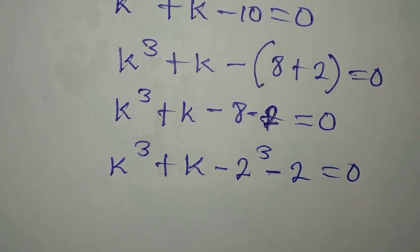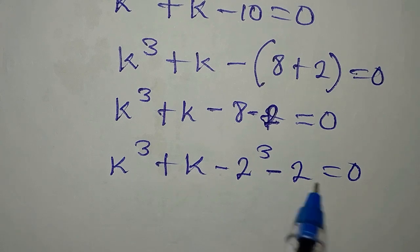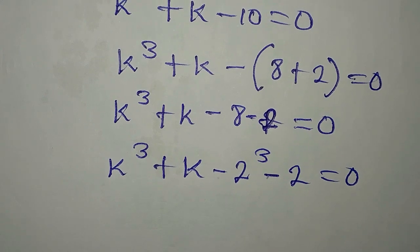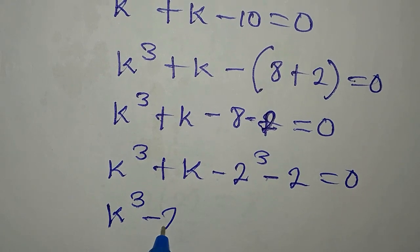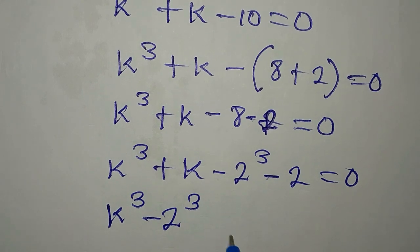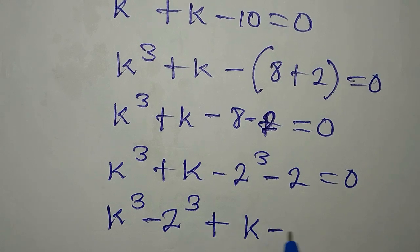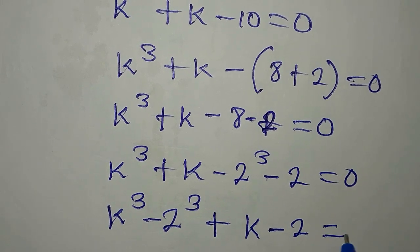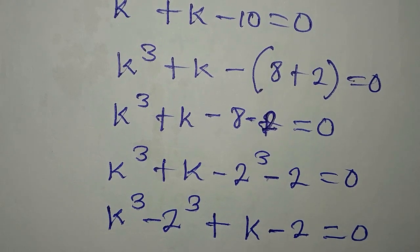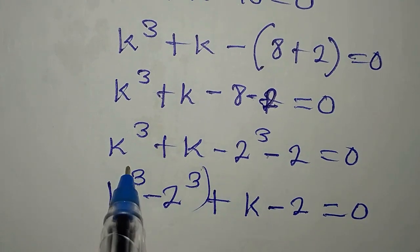The next step is to regroup so that we can work with the cubic terms together and the linear terms together. We have k to the power of 3 minus 2 to the power of 3, then plus k minus 2, all equal to zero.